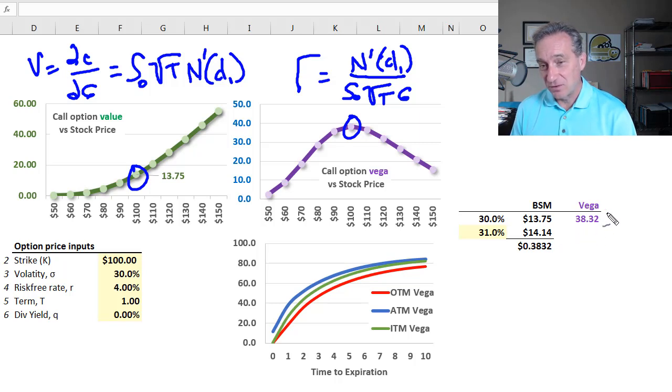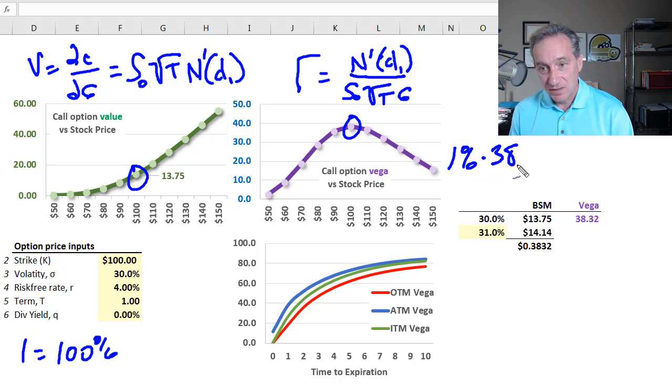It's a first partial derivative, so this is the approximated change in the call price—$38 would be the change in the call price for a one unit change in volatility. What's one unit though? It's 100%. But we wouldn't shock the volatility from 30% to 130%—that's unrealistic and would be very inaccurate as a linear approximation. But if volatility shocks by plus one percent, we could take one percent, multiply it by the Vega, and we would get 0.3832.